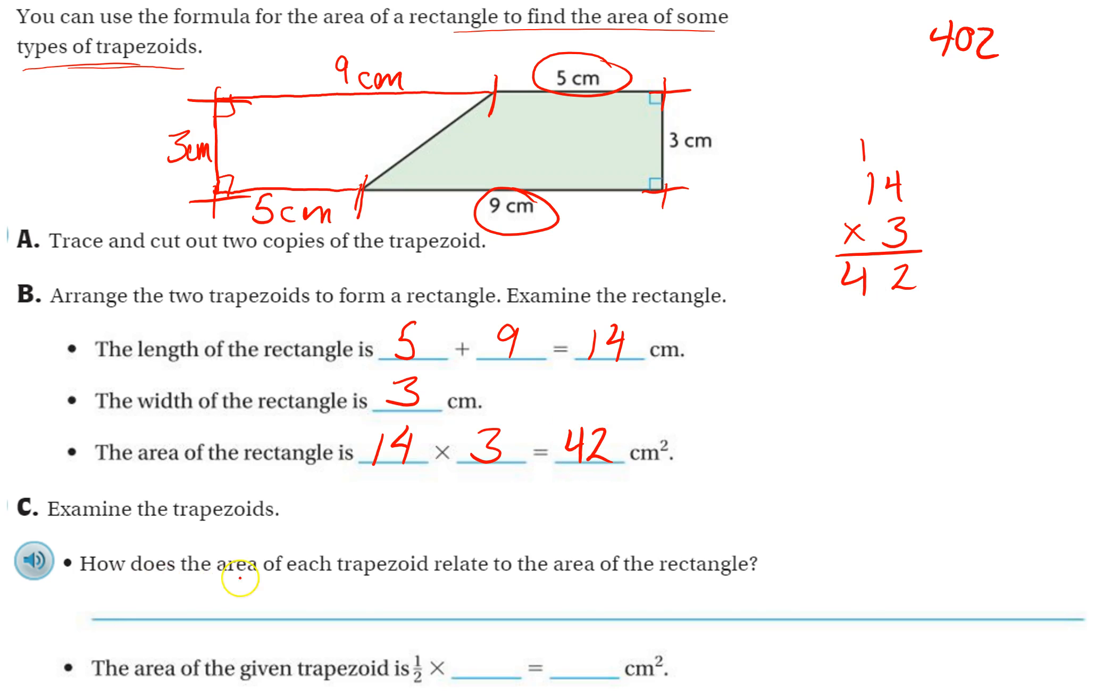Examine the trapezoids. How does the area of each trapezoid relate to the area of the triangle? Each trapezoid is half the area of the triangle. Did I do that right? Yeah. The trapezoid is half the area of the rectangle.